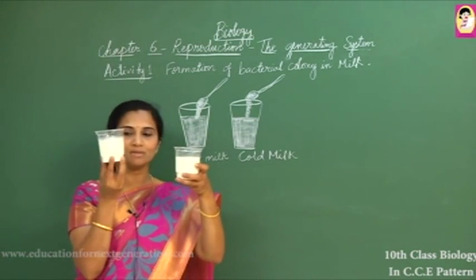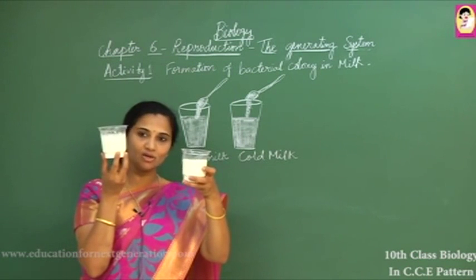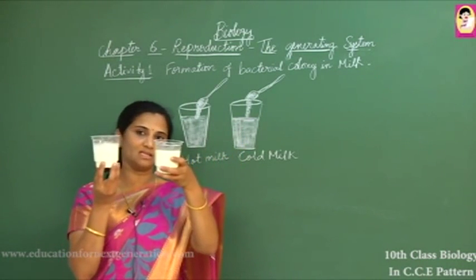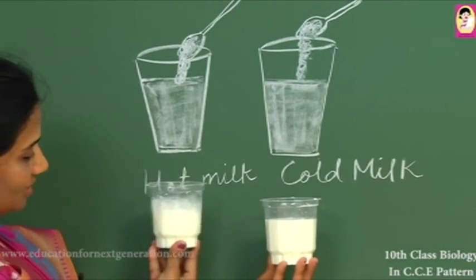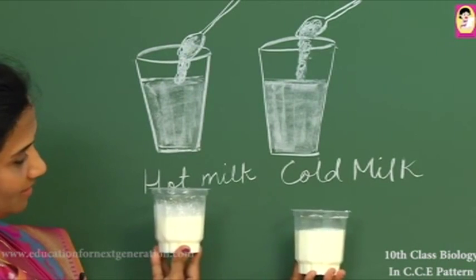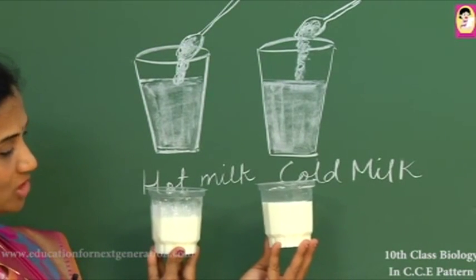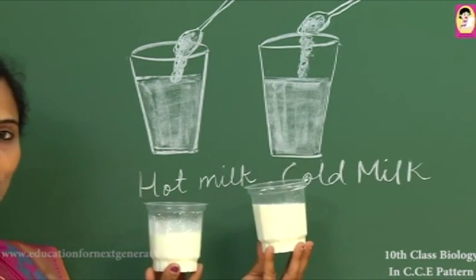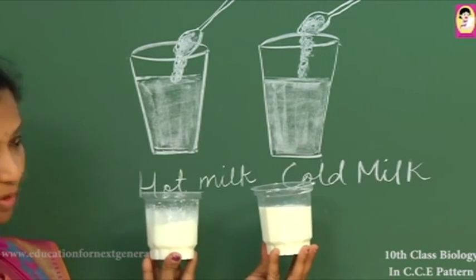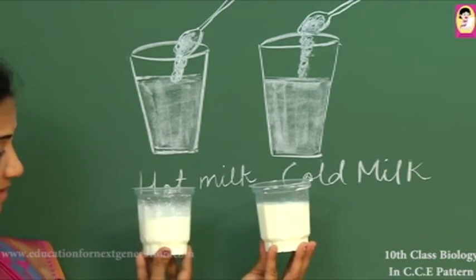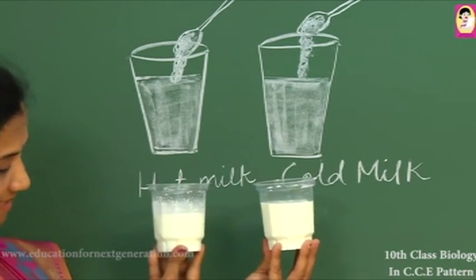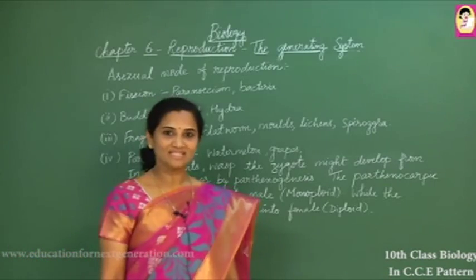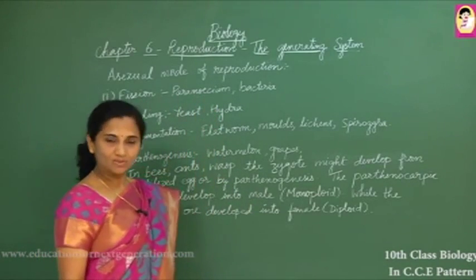The lactobacillus bacteria multiplies much faster in hot milk than in cold milk. At low temperature, the rate of respiration comes down for the bacteria and multiplication is also slower. At optimum temperature, bacteria multiply very fast, helping in the curdling of milk. This process by which lactobacillus converts milk into curd is known as the curdling process. Now let us see some asexual modes of reproduction.